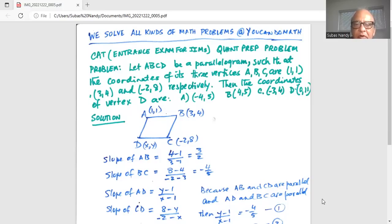But we know the slope of the line AB, which is (4-1) change in y divided by change in x, (4-1) divided by (3-1), or 3 divided by 2. Similarly, the slope of BC, which is change in y divided by change in x, which can be (8-4), and then (-2-3) or -4 over 5.